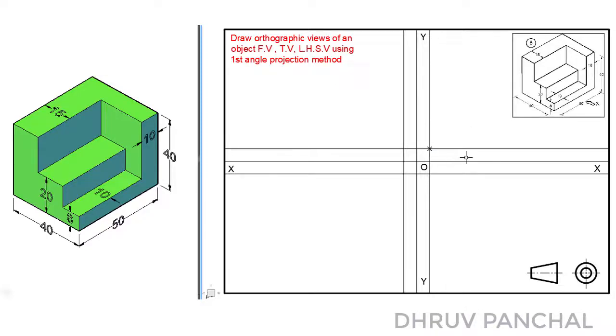Now mark the points in each quadrant as shown. These are the reference points for drawing the views in each quadrant.